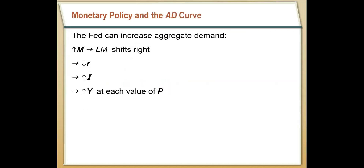As the Fed increases the money supply, it shifts the LM curve to the right, which reduces the interest rate and allows people to invest more — it reduces the cost of investment. And so they shift along the IS curve. We come to this new equilibrium level of output, and it increases total output Y for each level of P. At each price level, people are now willing to spend more.